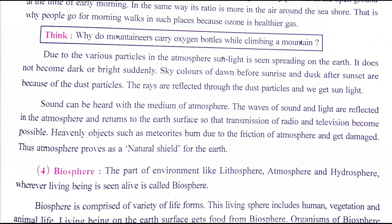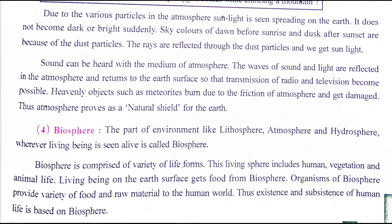Due to the various particles in the atmosphere, sunlight is seen spread gradually. There are many dust particles which work to reflect the sun's light. Because of this, it does not become dark or bright suddenly at the time of sunset or sunrise. The particles in the air scatter the light. When the sun rises, dust particles reflect the rays, and we see sunlight gradually — so sudden darkness or sudden brightness does not occur.